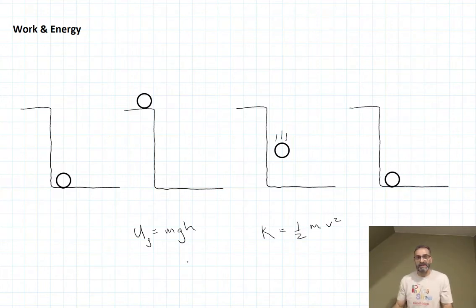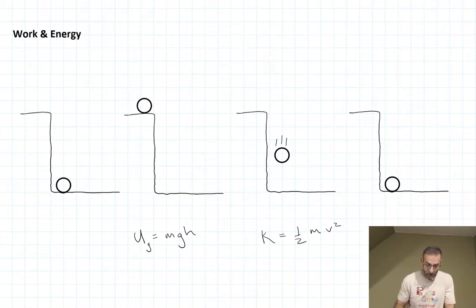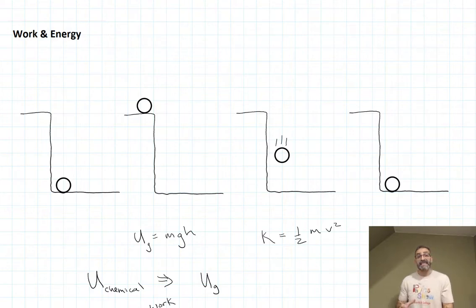But how did it get gravitational potential energy? Well, I did some work on the rock by lifting it up. And that's how we transfer energy from one object to another. So I had some energy stored in my body, some kind of chemical energy from the food that I ate. I had some chemical energy stored in my body, and I could use that to use my muscles to lift the rock up. So I did work on the rock. It started out as chemical energy stored in my muscles, in my body, and it ended up as gravitational potential energy of the rock. And how did it go from one to the other? Because I did some work on the rock changing its energy.